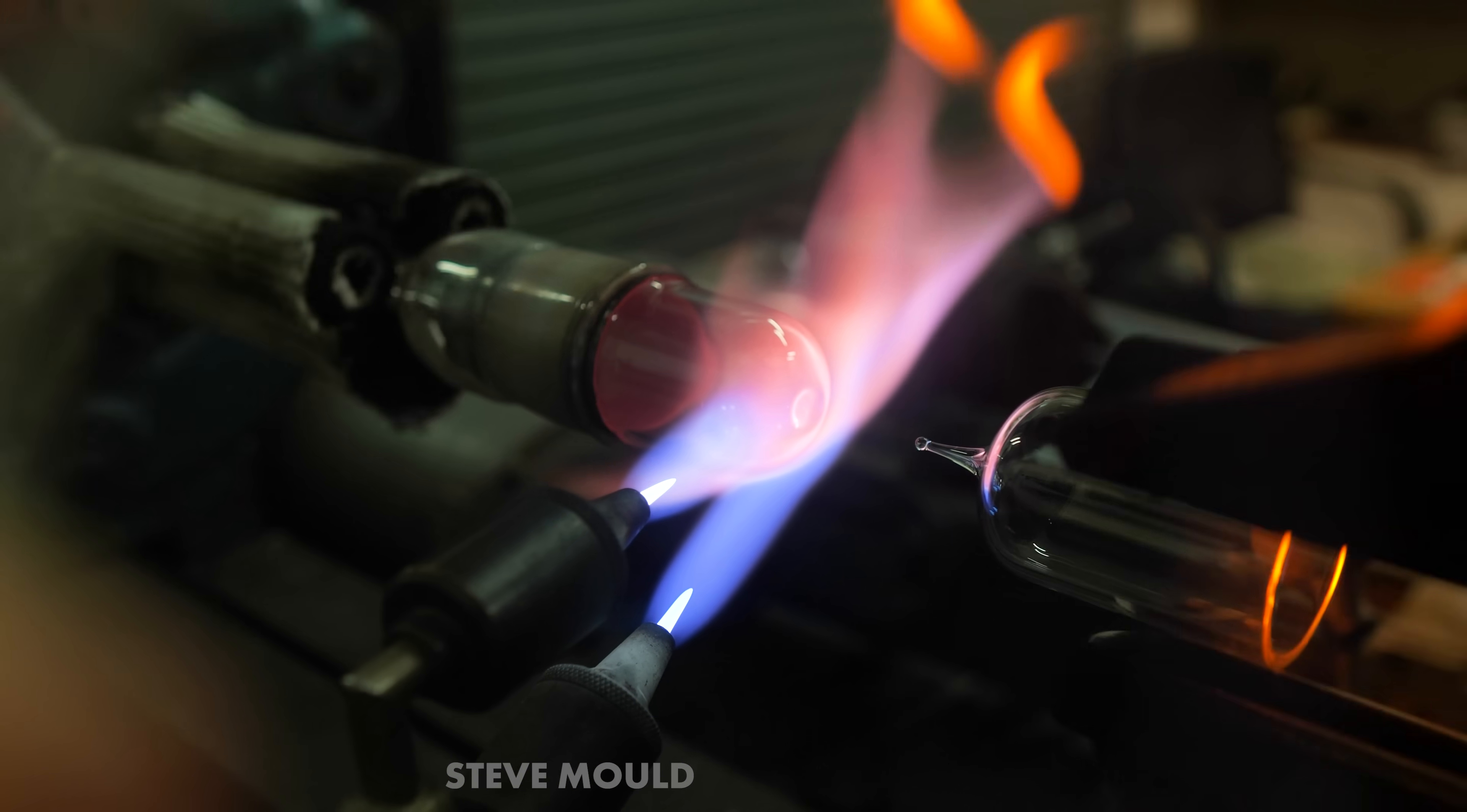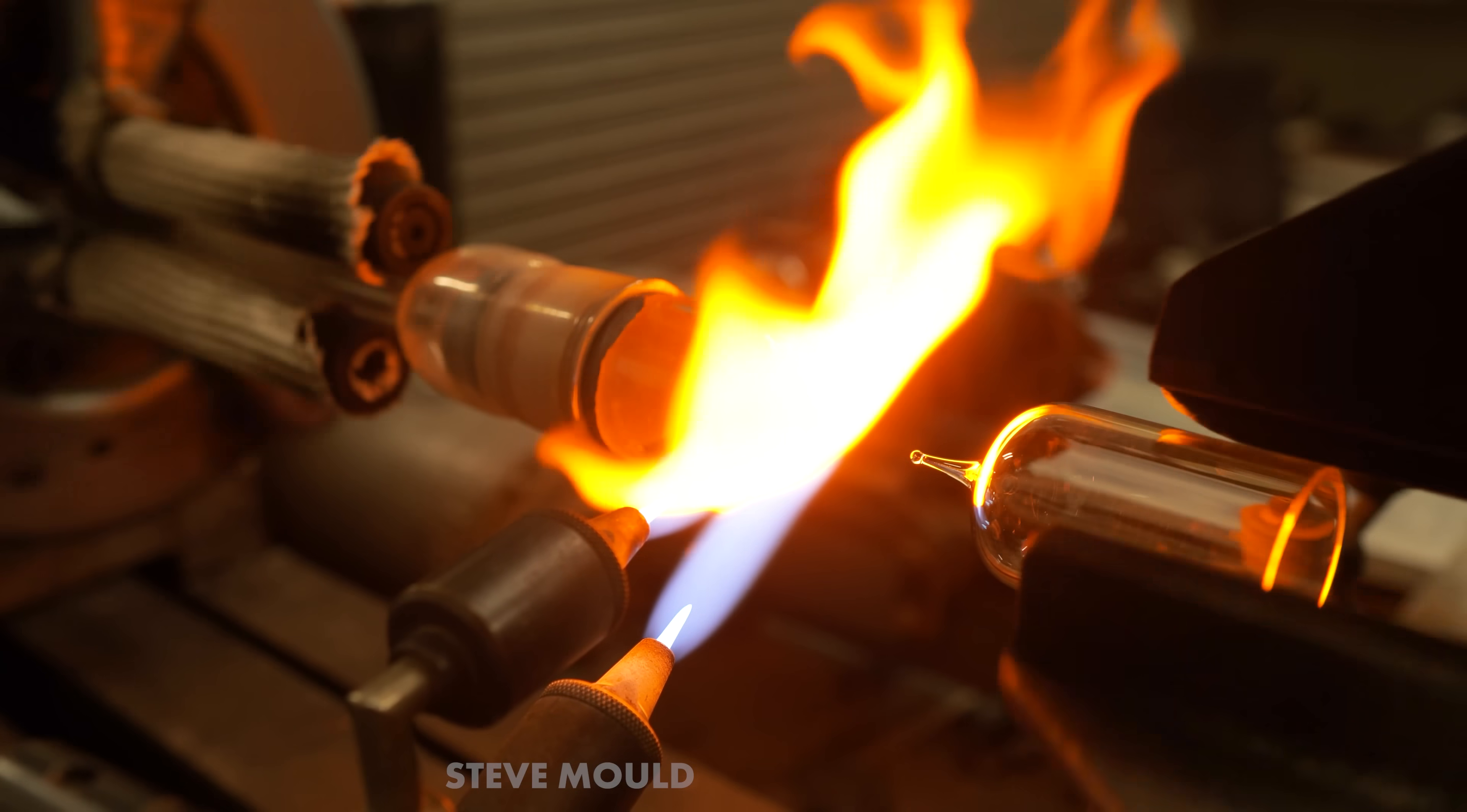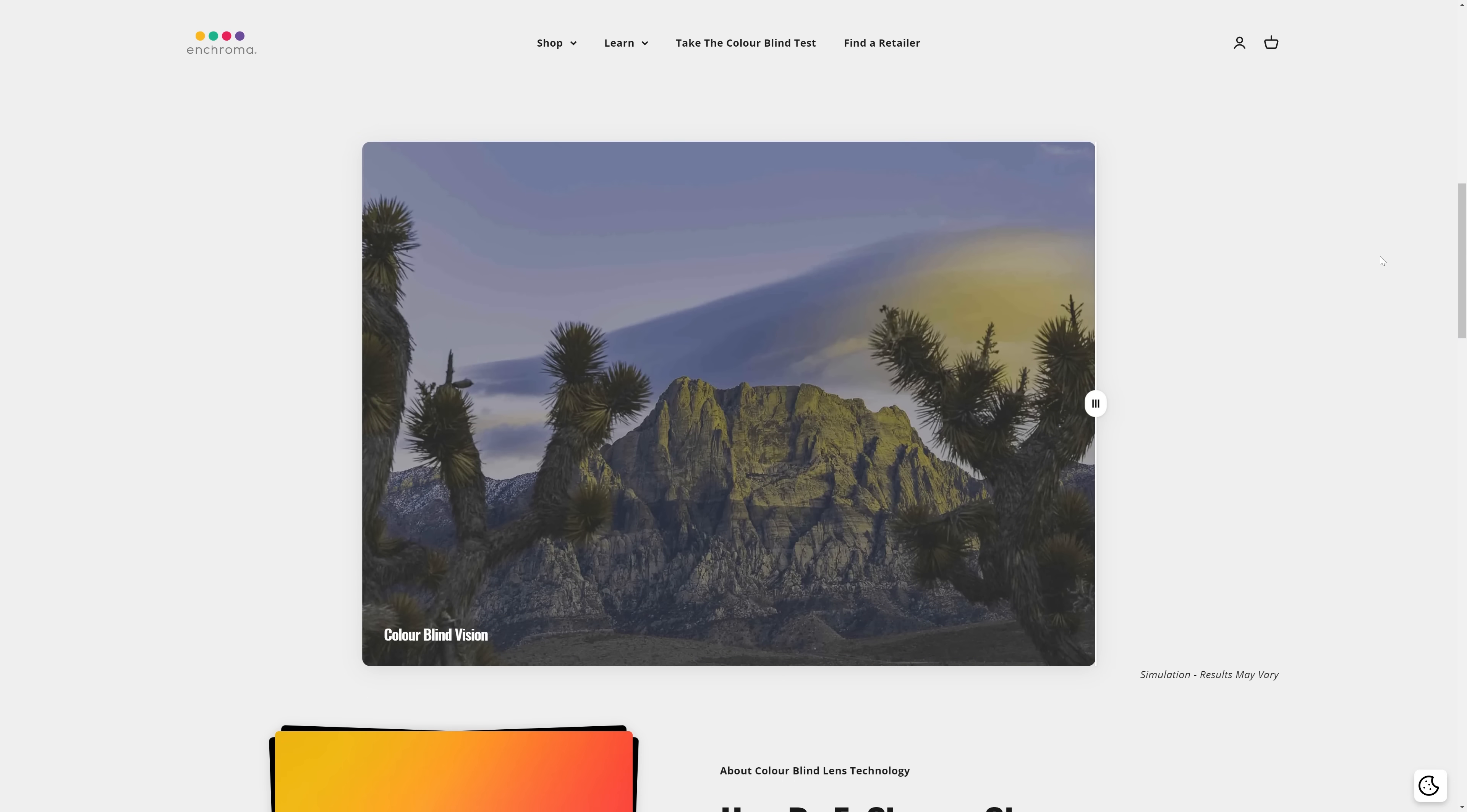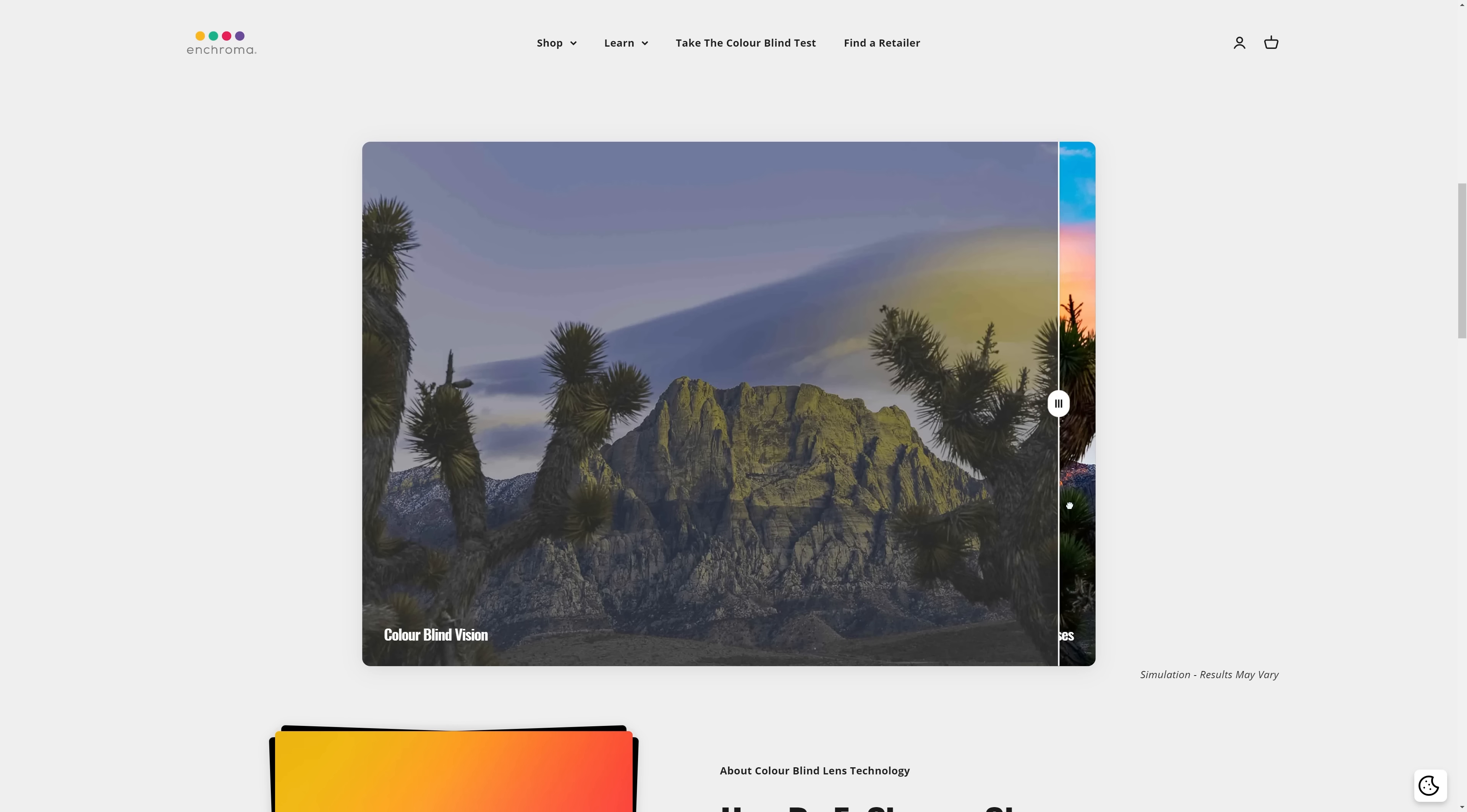While I was running tests on the glass blower glasses for this video, I realized that I now have the equipment that I need to run tests on these Enchroma glasses that I've had lying around for years. I've wanted to run the tests for a long time because when I heard about them, I was skeptical. They claim to enhance color vision for people with red-green color blindness. But how can something that removes light help someone to see colors that they don't have the anatomy for? So we're going to test whether the way these work matches the way Enchroma says they work.